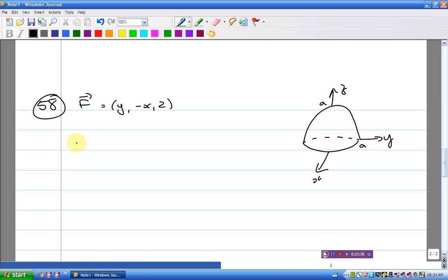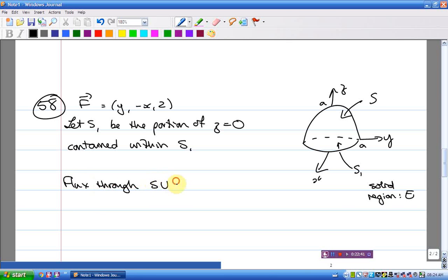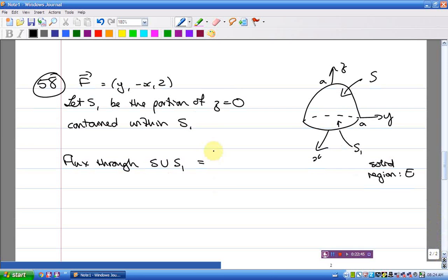And once again we have a hemisphere of radius a. So I'm going to call that S. And once again I'm going to call the introduced disk at the bottom S1. And because S1 is not mentioned in the wording of the problem, I should say something about it. Let S1 be the portion of z equals 0 contained within or bounded by S. And I'm going to call my solid region E.